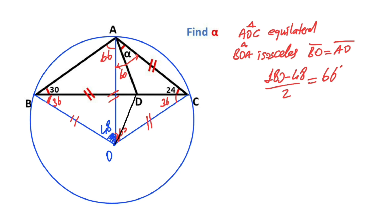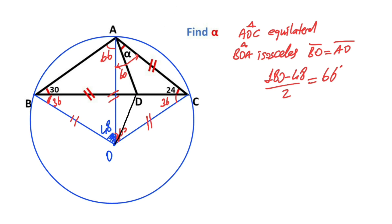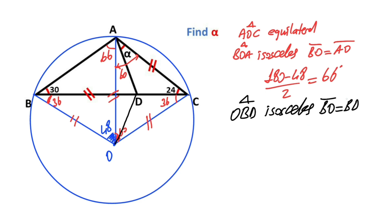Next, if we connect O and point D like this, notice that triangle OBD is also an isoceles triangle. That means BO must equal BD. So these angles here must equal 72 degrees, and 24 degrees is left here.